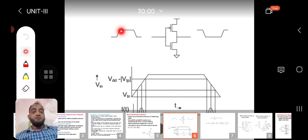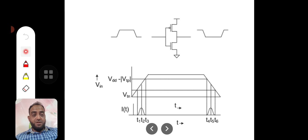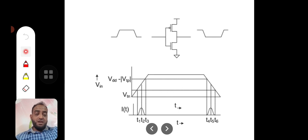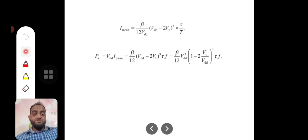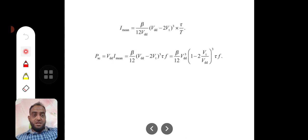From time t1 to t3, short circuit current flows, peaking at t2. During the fall time, short circuit current flows from t4 to t6, peaking at t5. The mean current flowing between supply and ground is given by: I_mean = (β/12) × (Vdd − 2Vt)³ × (τ/T), where τ is the transition time and T is the clock period.